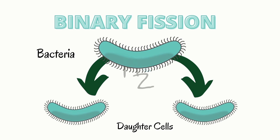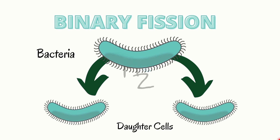The parent cell has the genetic material. It will duplicate it so that each daughter cell gets the same genetic material. It duplicates the DNA into two and also cleaves its cytoplasm by cytokinesis. After cytokinesis, the bacterium results in two daughter cells.